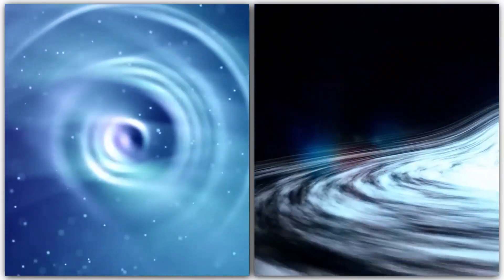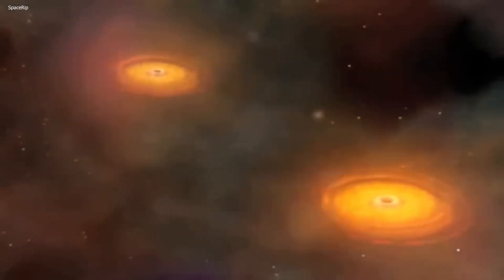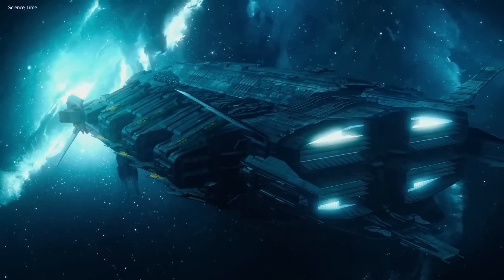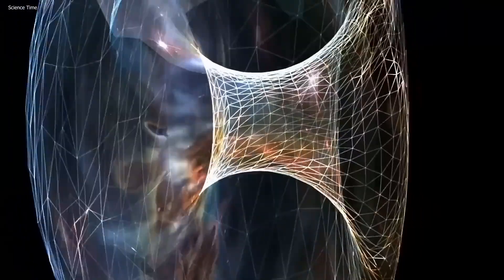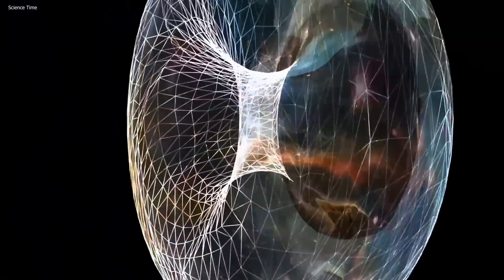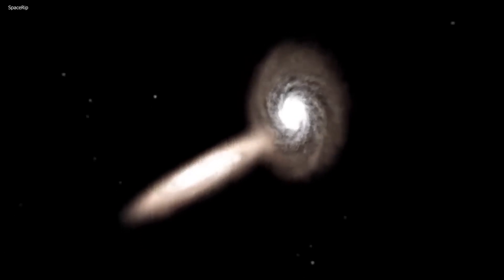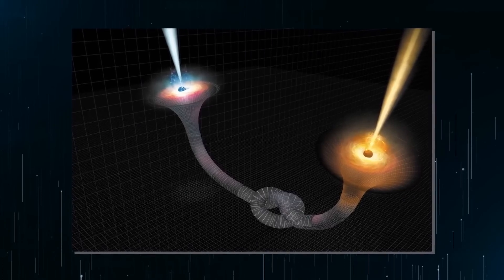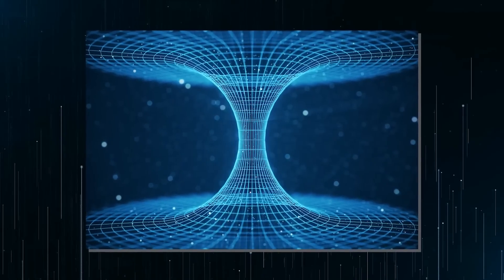As for wormholes, well, we have already told you all there is to know about them. But what sets these two objects apart from each other? Well, for starters, black holes are real and have been observed, while wormholes remain purely theoretical. Black holes are also defined by their strong gravitational pull, which is what makes them so fascinating and mysterious. On the other hand, wormholes are defined by their potential to connect distant points in the universe and are not known for their strong gravitational pull. Another difference between black holes and wormholes is their size. Black holes can range from being just a few miles across to millions of miles across. On the other hand, the size of wormholes is not well understood, but they are thought to be much smaller and potentially much more difficult to detect.